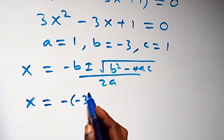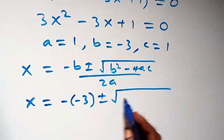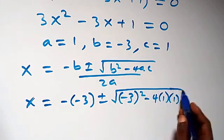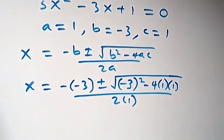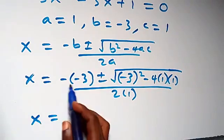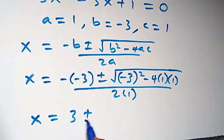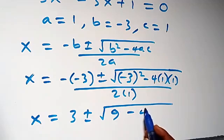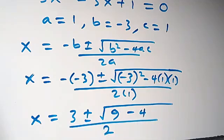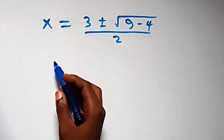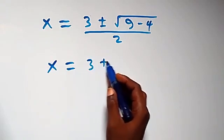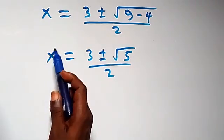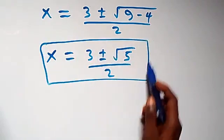Applying the quadratic formula with a equals three, b equals minus three, c equals one: x equals three plus or minus square root of minus three squared minus four times one, over two times one. This gives x equals three plus or minus square root of nine minus four, over two, which is x equals three plus or minus root five, over two. So we have two real solutions from Case two.